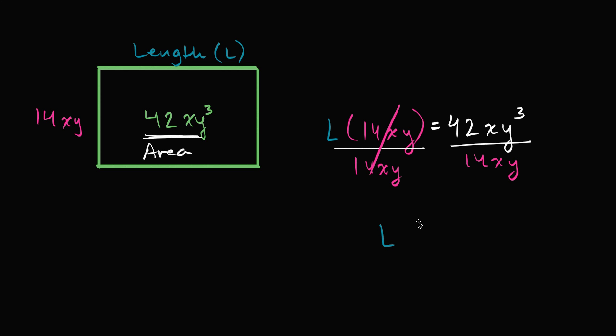And on the right-hand side, I can look at the coefficients first. I could say 42 divided by 14. That's going to be three.